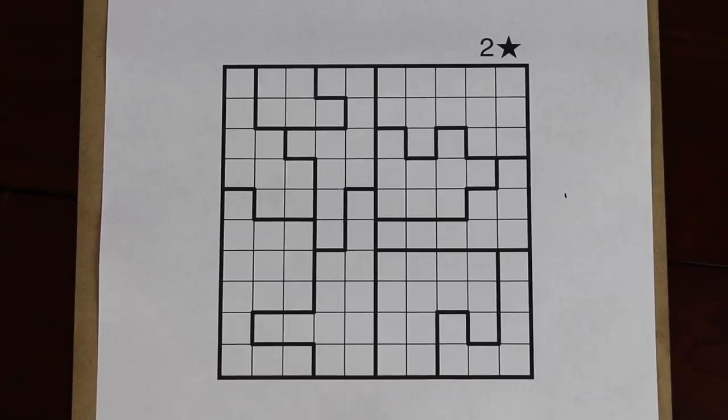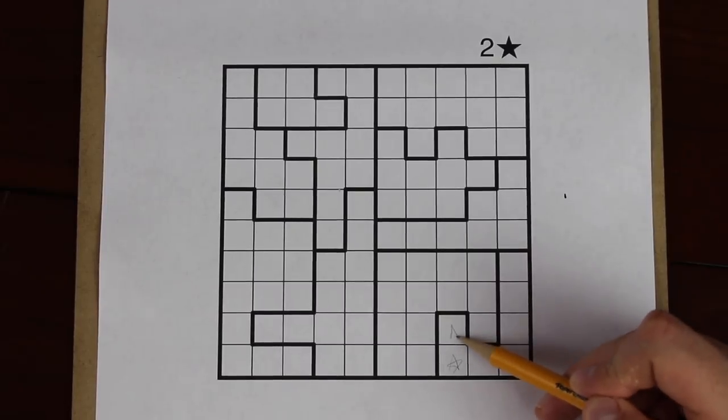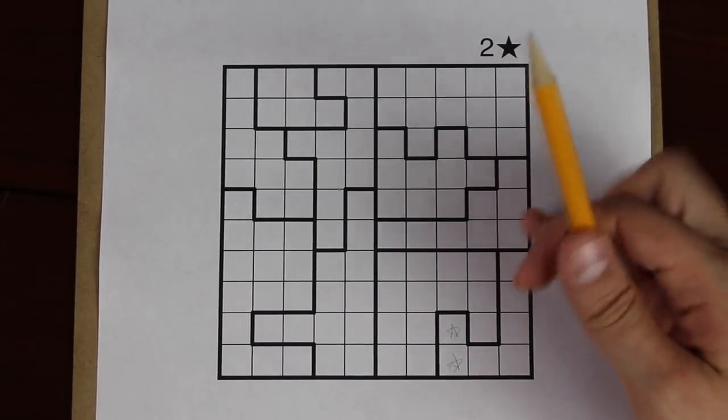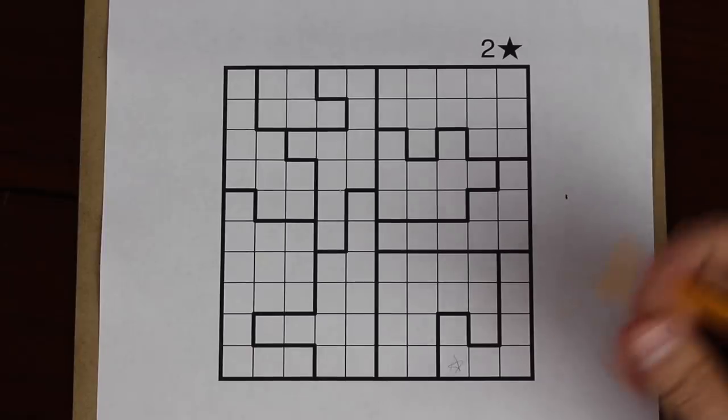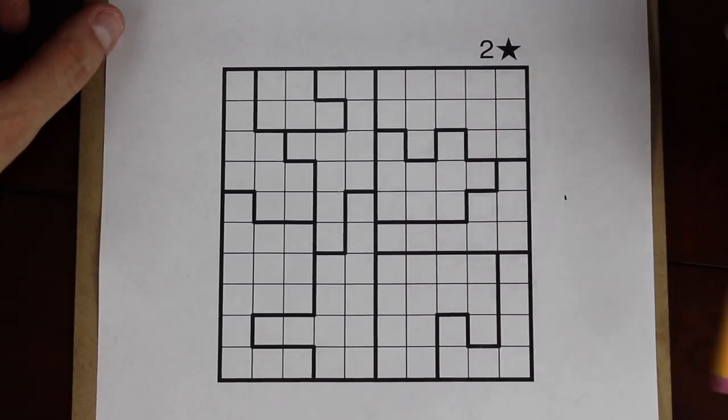In addition to that, no two stars can touch each other, not even diagonally. So having two stars like this would not be allowed. But also, having two stars diagonal from each other like this is not allowed. With all the rules in mind, let's get solving.